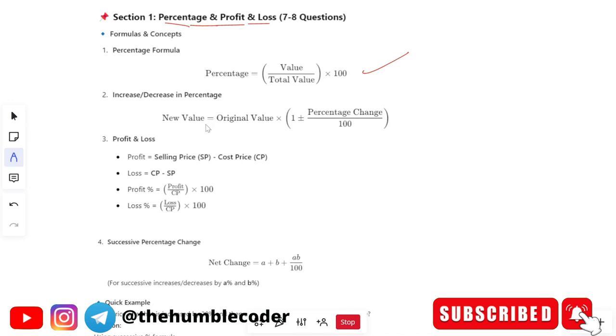So whenever you have a question where the increase or decrease in the percentage is asked, what you have to do is in order to calculate the new value you need your original value multiplied by one plus or minus percentage change divided by hundred depends upon the profit or loss. If it is increased then you have to add plus. If it is decreased then you have to add minus.